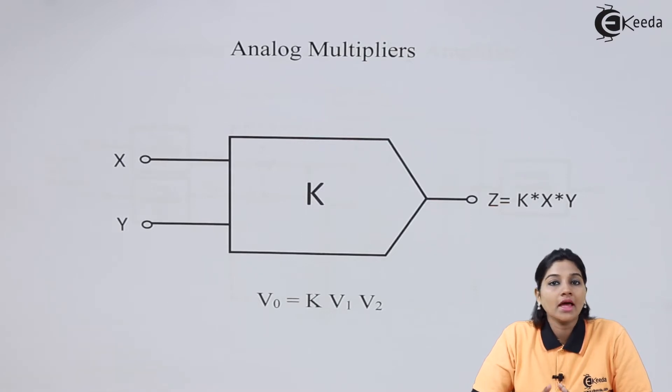Multiplier, as its name indicates, an active network which produces output voltage proportional to or equal to multiplication of the input signals applied are called as Analog Multipliers.